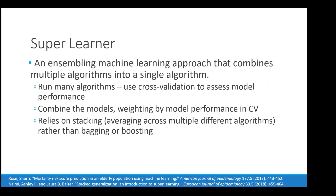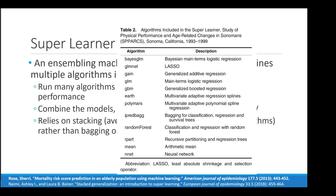The super learner is an ensemble machine learning approach that combines multiple algorithms into a single algorithm. You run many algorithms, use cross-validation to assess model performance, and combine the models weighted by their cross-validation performance — this relies on stacking rather than bagging or boosting. A reference by Sherri Rose in the American Journal of Epidemiology examined 12 models including random forest and LASSO, using a super learner to determine how each model's predictions should be weighted for a final prediction.